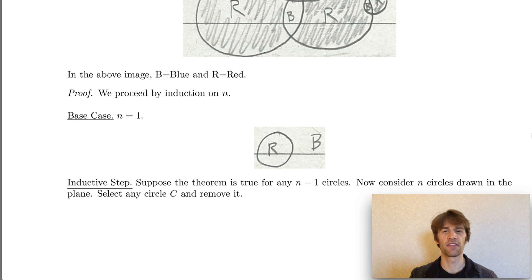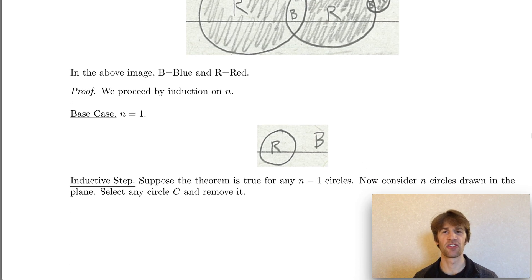Now in the inductive step we'll assume that the theorem is true whenever you have n minus one circles drawn in the plane, and our task is to prove that it remains true for n circles.